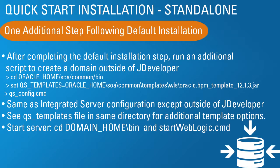For standalone installation, the steps are nearly as easy as the default — there's just one more thing to do. After completing the default installation, you run an additional script that creates your domain outside of JDeveloper. Go to the SOA common bin directory in your Oracle home. Set your templates environment variable — this tells the config script what you want installed using pre-configured templates, this one being the BPM template. Then run the qs-config command file script. The server you get is exactly the same as the integrated server configuration, except it lives outside of JDeveloper.